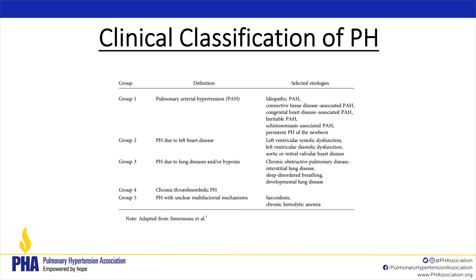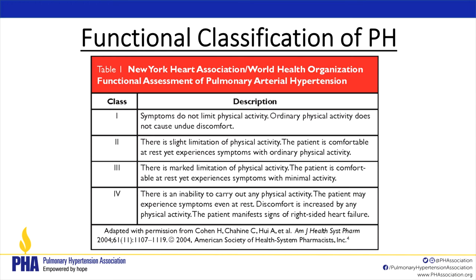We also talk about functional class — this is really why we ask you so many questions when you come in. We want to know your functional ability every day, because our goal is for you to have a better quality of life. We use New York Heart Association classes 1 through 4. Class 1 has no limitation in physical activity. As the number gets higher — slight limitation, marked limitation — up to class 4, where you're short of breath even at rest.